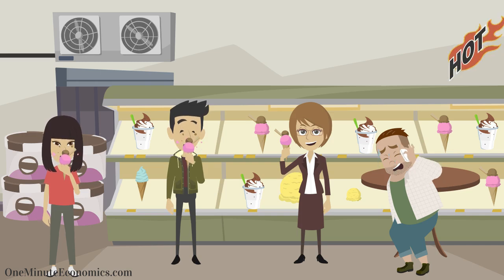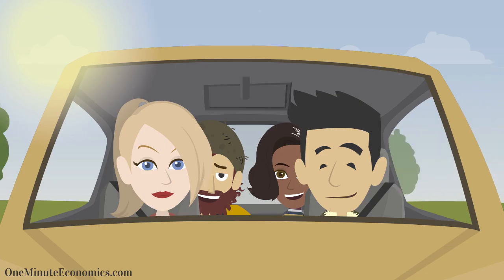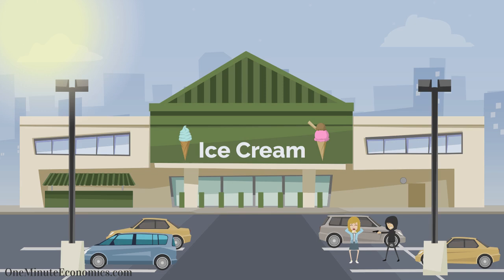Simply put, more people buy ice cream when it's sunny outside on the one hand, and more people go out when it's sunny on the other and end up representing potential homicide victims.